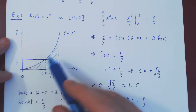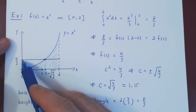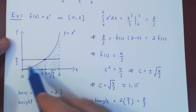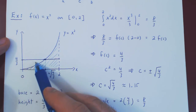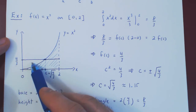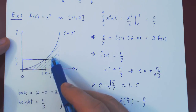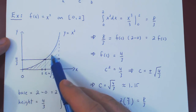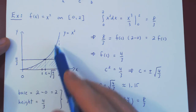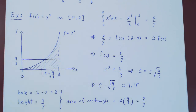So this is the value of c stated in the mean value theorem, and the picture looks pretty good. You can see that the area added when finding the area of the rectangle — the extra region — is exactly what you're missing on the other side. Hopefully with this, the mean value theorem of integration seems more intuitive.